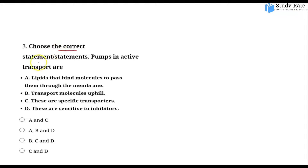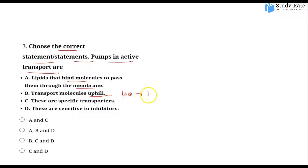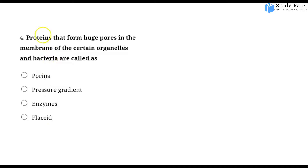The third question asks: Choose the correct statement about transport pumps. Pumps are not lipid molecules; they are proteins that bind molecules and transport them across the membrane. Uphill movement occurs from low concentration to high concentration. Pumps show uphill movement and are specific transporters that are sensitive to inhibitors. So options B, C, and D are correct.